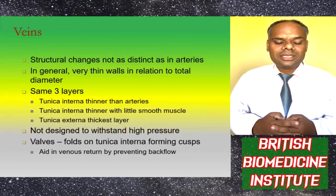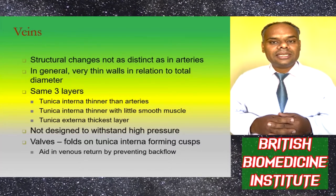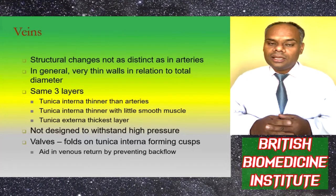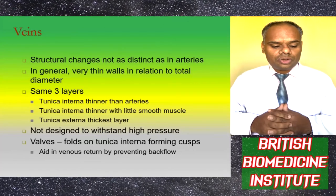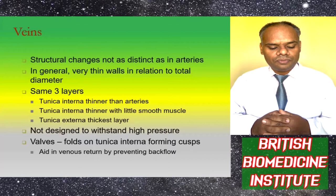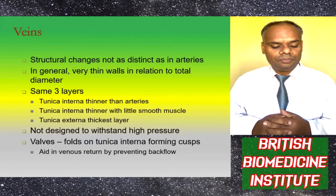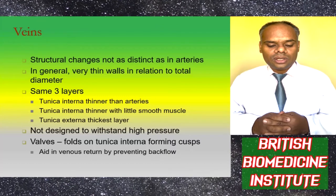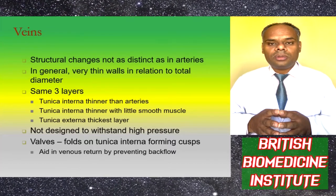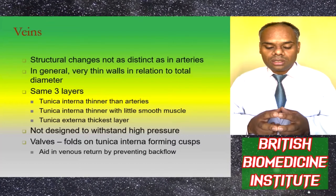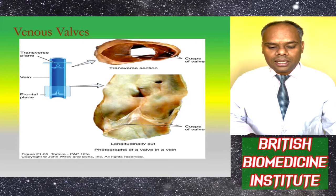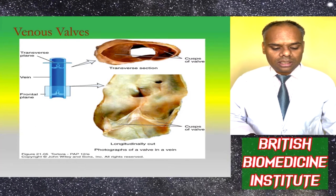Veins have structural layers that are not as distinct as in arteries, with generally very thin walls relative to total diameter. There are three layers: tunica interna, which is thinner than in arteries with little smooth muscle; tunica media, which is also thin; and tunica externa, which is the thickest layer. Veins are not designed to withstand high pressure. Their walls fold on the tunica interna forming cusps, which aid in venous return by preventing backflow. A diagram of venous valves shows these cusps clearly in longitudinal section.